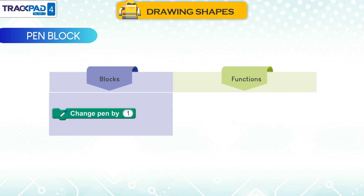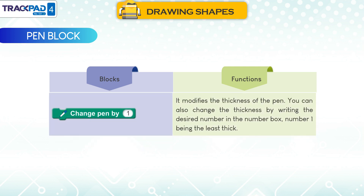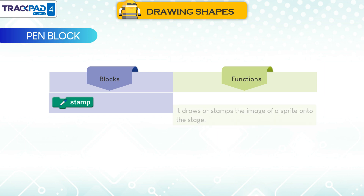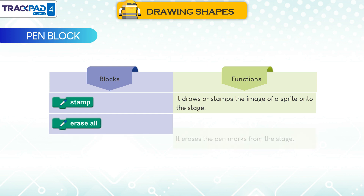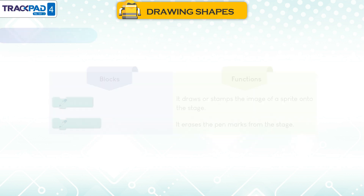Change Pen by 1: it modifies the thickness of the pen. You can also change the thickness by writing the desired number in the number box, number 1 being the least thick. Stamp: it draws or stamps the image of a sprite onto the stage. Erase All: it erases the pen marks from the stage.